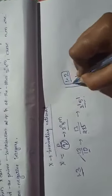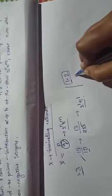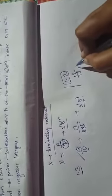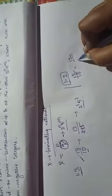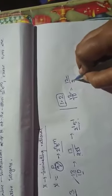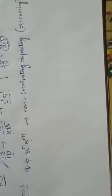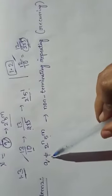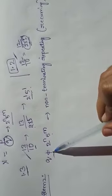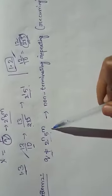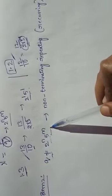1.2 is a terminating rational number. 1.2 is 12 by 10. 10 can be written in the form of prime factorization 2 into 5. So Q is written in the form of 2 power 1 into 5 power 1. So this is a terminating rational number.